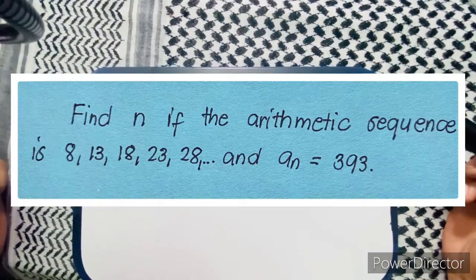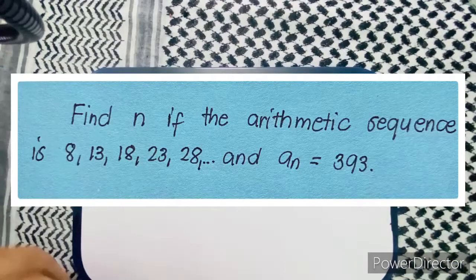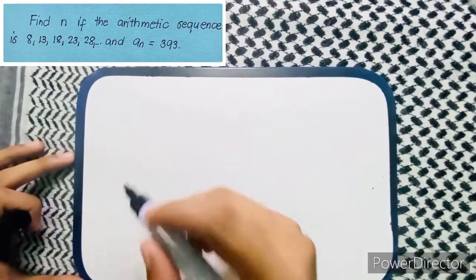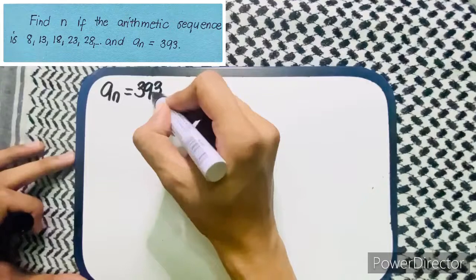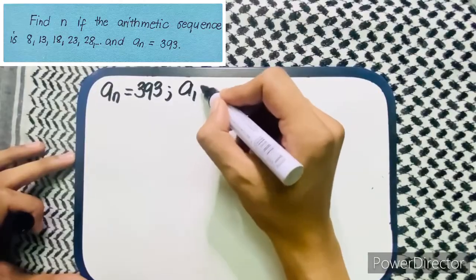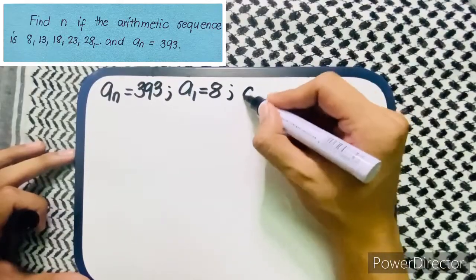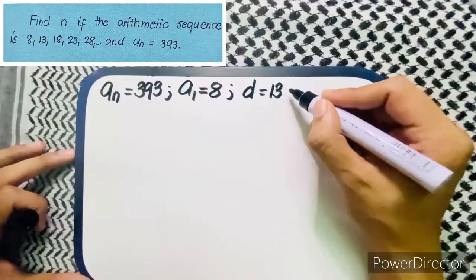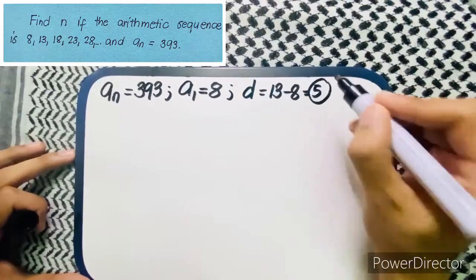For the first problem, find n if the arithmetic sequence is 8, 13, 18, 23, 28 and a sub n is equal to 393. Based on the problem, our given is a sub n which is 393, our first term a sub 1 is equal to 8, and the common difference is 13 minus 8, which is 5.